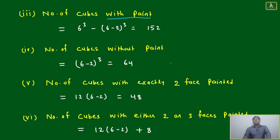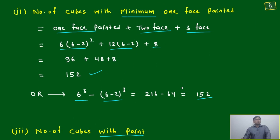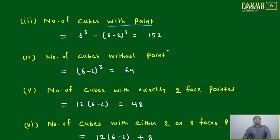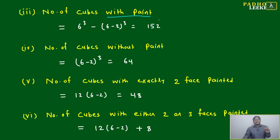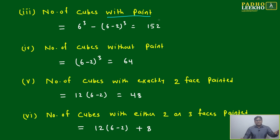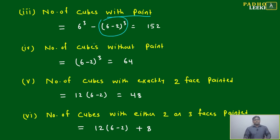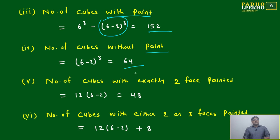The question can also be asked as: how many cubes are painted? With paint means one face, two face, or three face — as long as paint is there. We are not worried about how many faces, just that paint exists. So again: total cubes minus internal (unpainted) cubes = 216 minus 64 = 152. Without paint means only the internal part: (6−2)³ = 64.